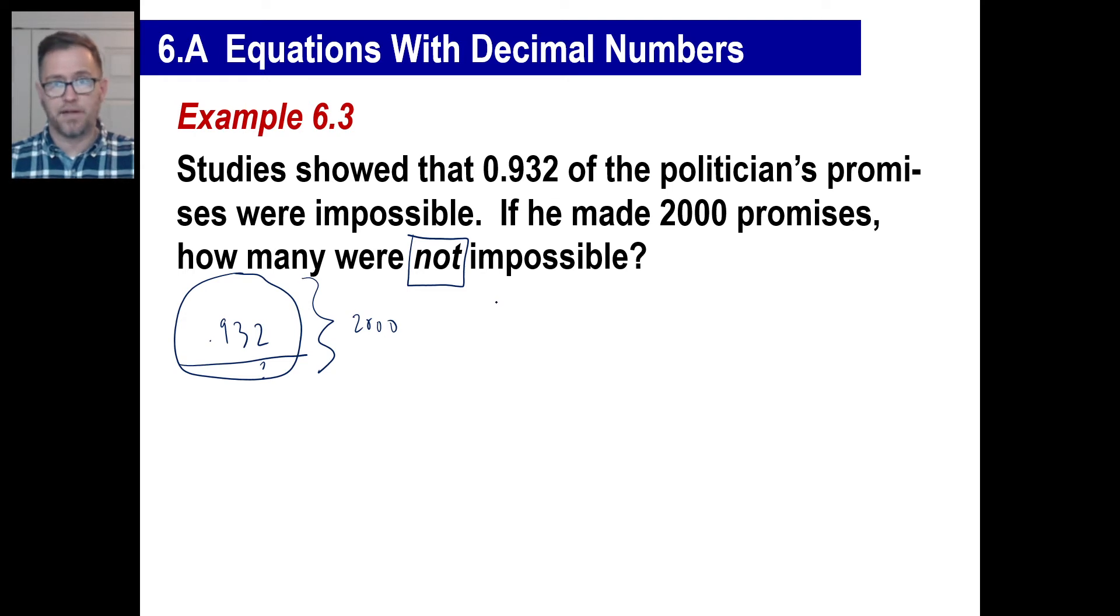All right. Well, the question we ask, then, is what is 0.932 of 2,000? And I'll stop right there. Does that make sense? I mean, we're trying to figure out what this number is right here. Once we find that, we'll subtract it from 2,000 and find out how many were not impossible, right? But that's the question we're asking right here. You'll get quicker at these, and they'll come to you, and you'll be able to do them. But let's turn this into an equation.